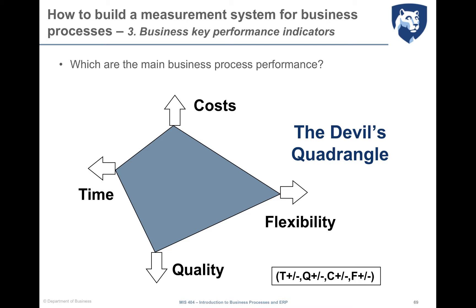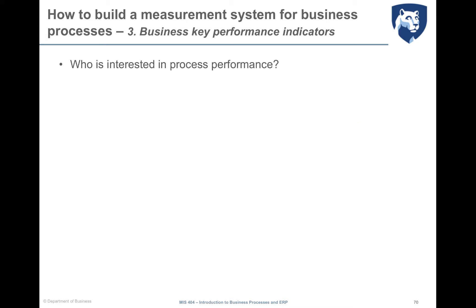Think about the evident trade-off between cost and quality. If you want costs to go down, you should reduce quality; if you want a higher-quality output, you should expect higher costs. When considering how to set specific KPIs, we should first consider who is interested in understanding if process performance is good or bad — essentially, the stakeholders of our process.